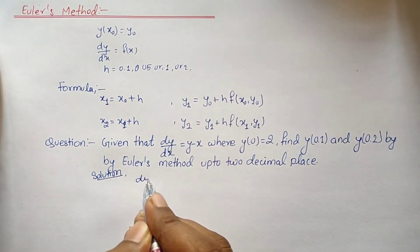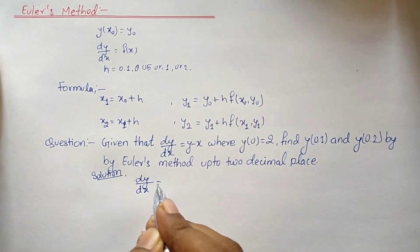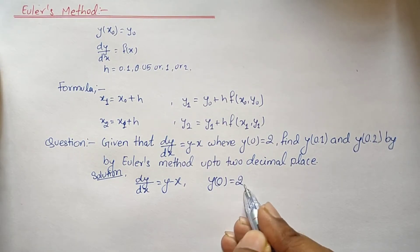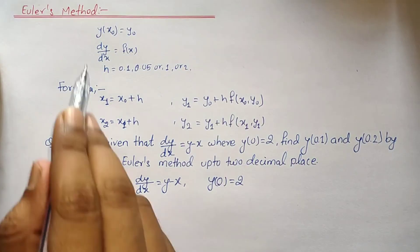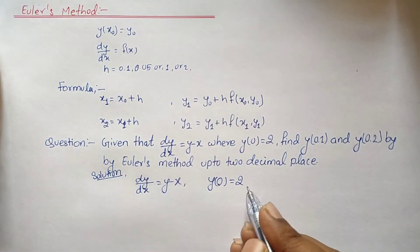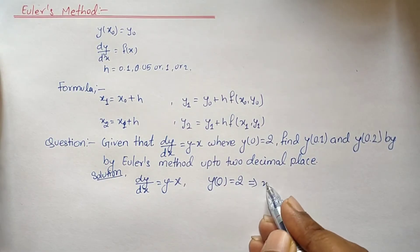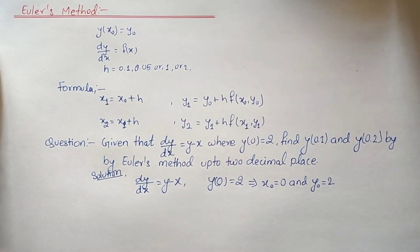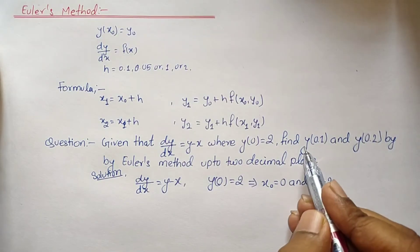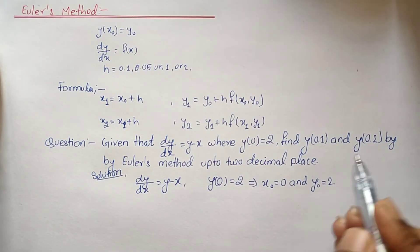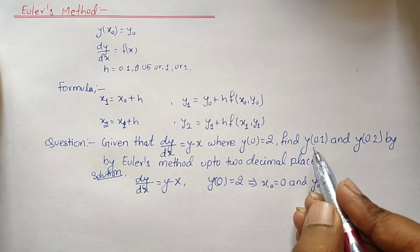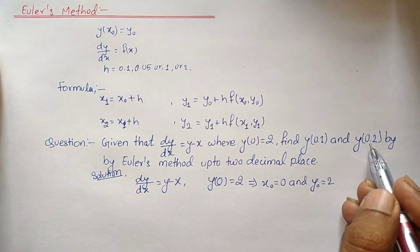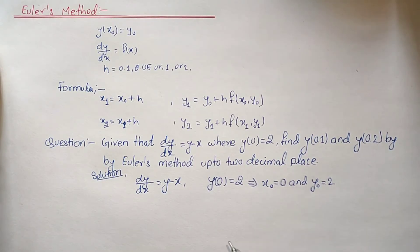Solution: We have dy/dx equals y minus x, and y(0) equals 2. Comparing with y(x₀) equals y₀, we get x₀ equals 0 and y₀ equals 2. We are asked to find the value of y(0.1) and y(0.2).